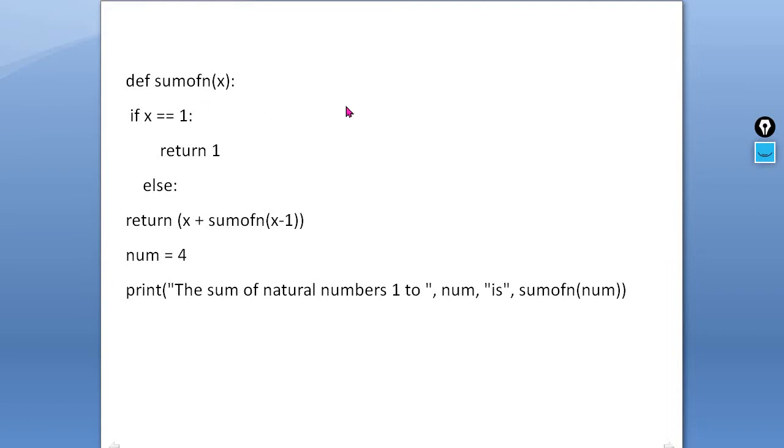This is a program. First of all, we are going to define a function. The name of the function is sum of n, parameter is x. If x is equal to 1, then what happens? Sum is only 1, so we are returning 1.